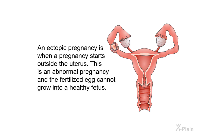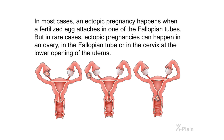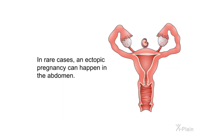An ectopic pregnancy is when a pregnancy starts outside the uterus. This is an abnormal pregnancy and the fertilized egg cannot grow into a healthy fetus. In most cases, an ectopic pregnancy happens when a fertilized egg attaches in one of the fallopian tubes. In rare cases, ectopic pregnancies can happen in an ovary, in the cervix at the lower opening of the uterus, or in the abdomen.